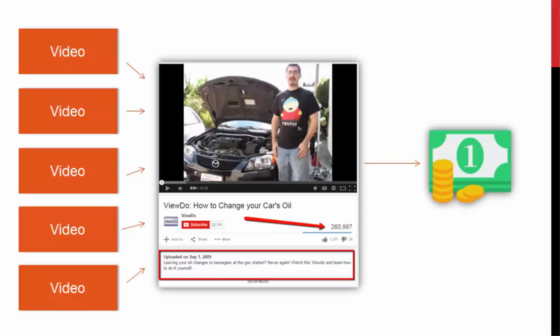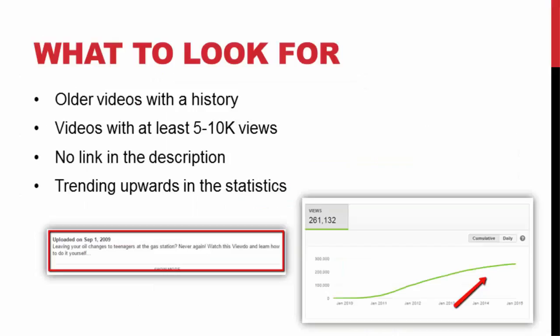Pretty simple, right? It sounds like common sense that someone would have a website link in their description, but it's common sense for us as marketers — it's not common for people who aren't marketers. They just have the video up, getting all kinds of views and they're just excited about those views. When we offer them money to put a link in their description, it's usually a no-brainer — they'll say yes absolutely, just to put a link in my description, no problem.